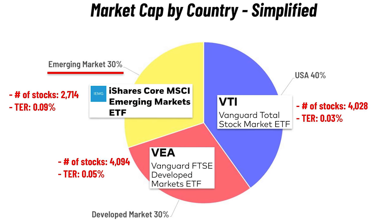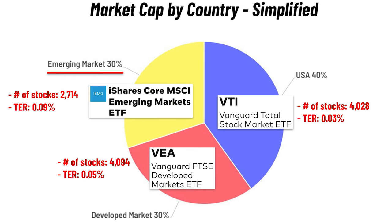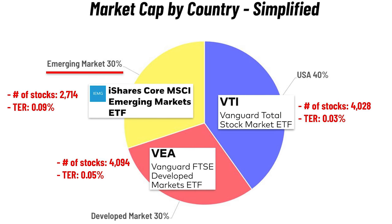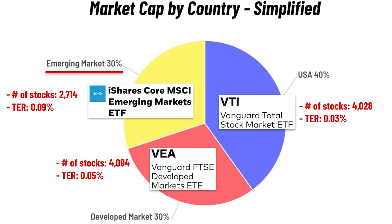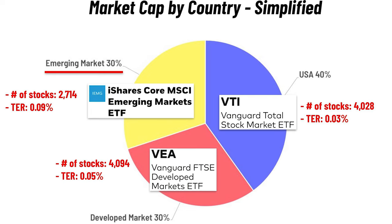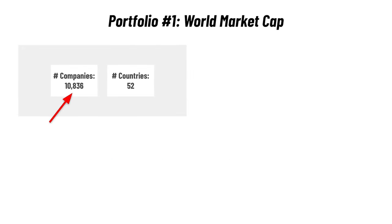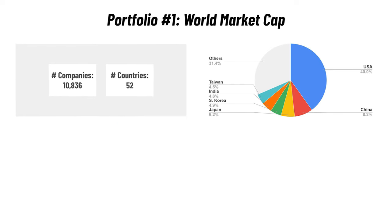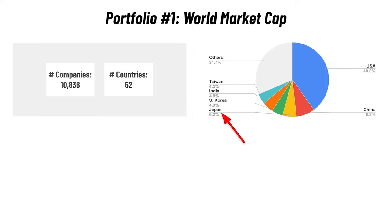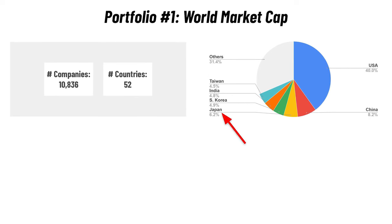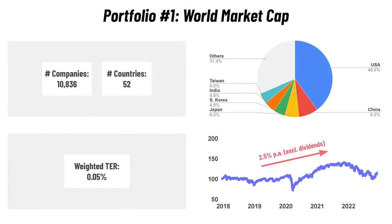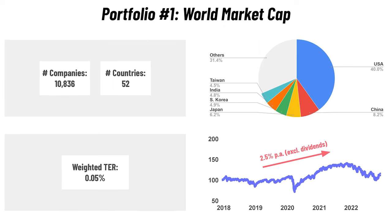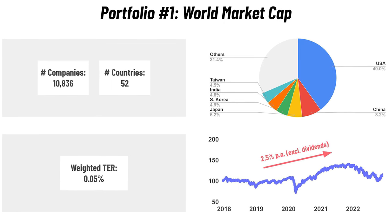One option for emerging markets is the iShares Core MSCI Emerging Markets ETF, ticker symbol IEMG. It invests in 2,700 companies from 28 emerging market countries with an expense ratio of 0.09%. Investing 40% in VTI, 30% in VEA, and 30% in IEMG gives you a portfolio of 10,800 companies from 52 countries — 40% in the US, 8% in China, 6% in Japan — with a weighted expense ratio of 0.05%. Over the last five years, that portfolio would have generated a return of 2.5% per year, excluding dividends. You just need to invest regularly and rebalance once a year.